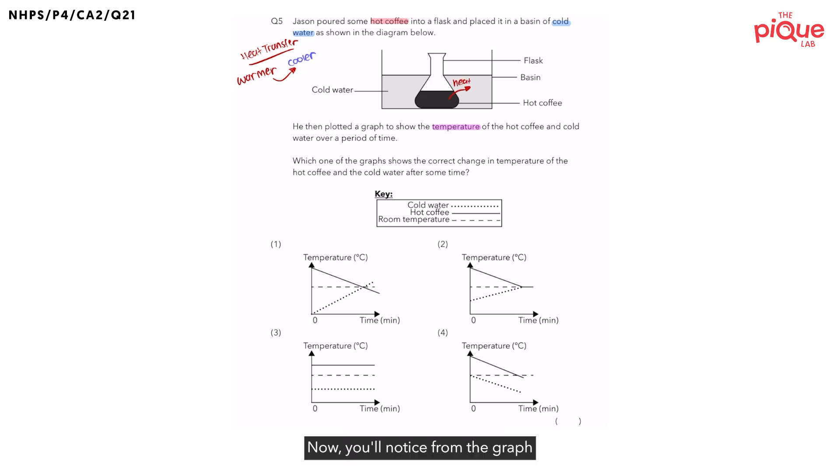Now, you notice from the graph, the question wants us to find the temperature change between the two objects. If the hot coffee were to lose heat, would the temperature of the hot coffee increase or decrease? The temperature would decrease. On the opposite side, we say that the cold water gains heat from the hot coffee, right? So, what happens to the temperature of the cold water? We would see an increase in temperature of the cold water.